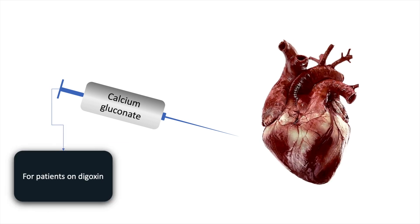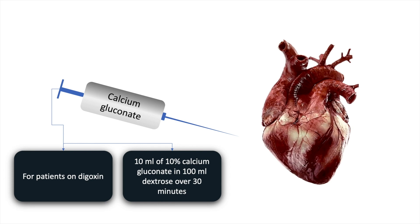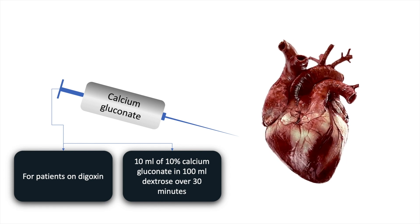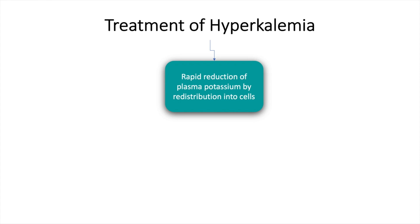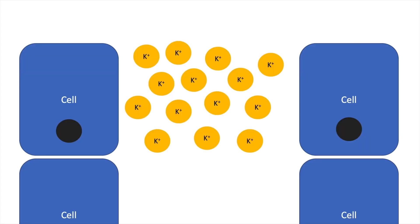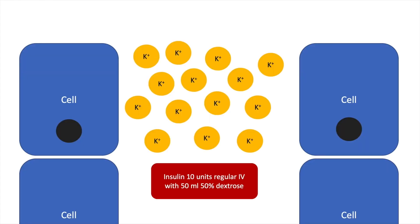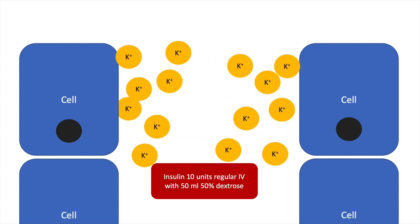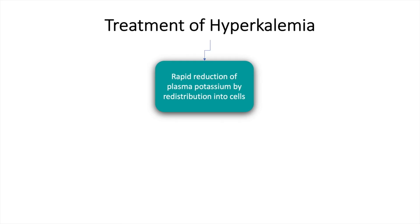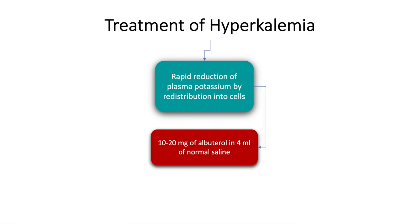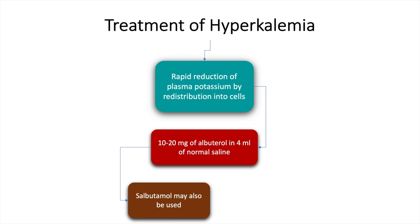In patients who are on digoxin, 10 ml of 10% calcium gluconate in 100 ml dextrose over 30 minutes is preferred. Rapid reduction of plasma potassium by redistribution into cells may be accomplished by insulin — 10 units regular insulin intravenous with 50 ml of 50% dextrose. This may also be accomplished with 10-20 mg of albuterol in 4 ml of normal saline; salbutamol may also be used.